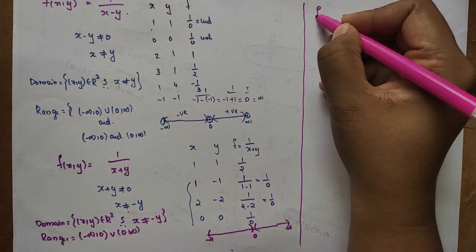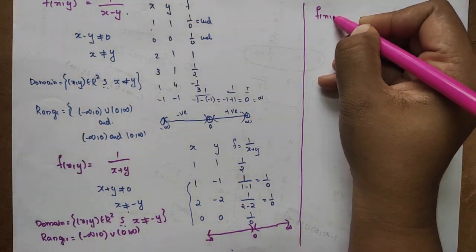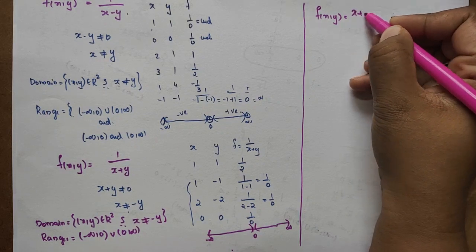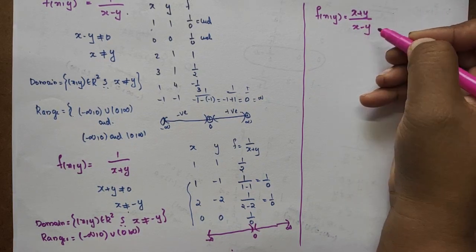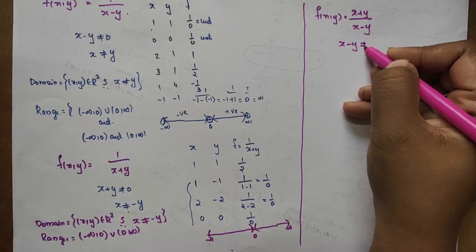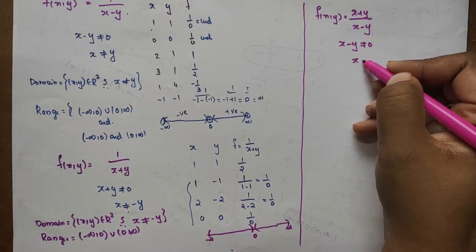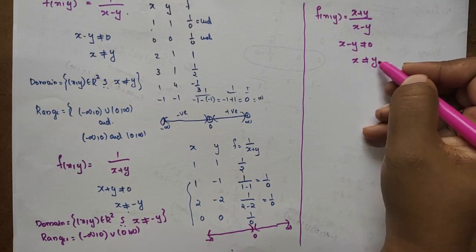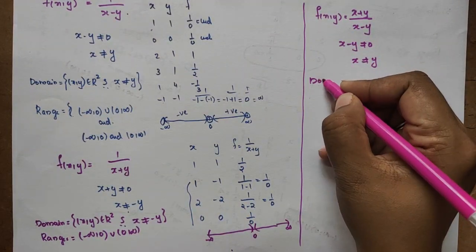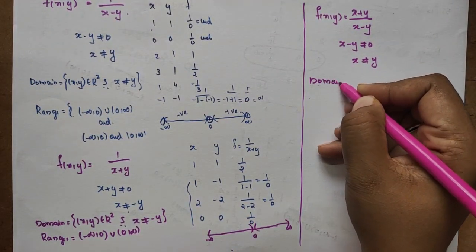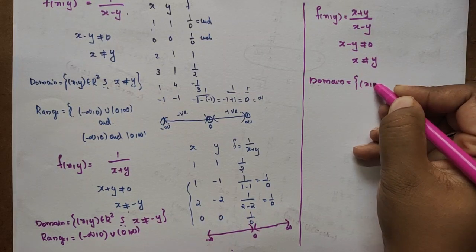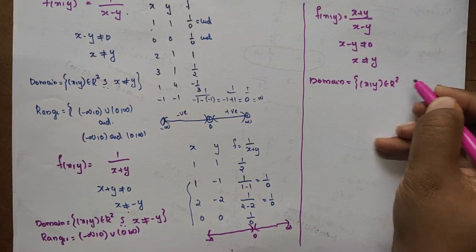Next question: f(x,y) = (x+y)/(x−y). The denominator is 0 when x = y, so the domain excludes x = y. The domain is ordered pairs (x,y) in R² where x ≠ y.